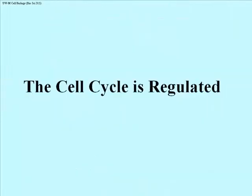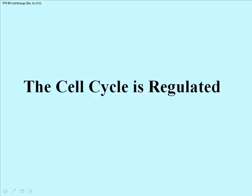The cell cycle is regulated. The ability of a cell to progress from one phase to the next is under control — it's not predestined. Entering a new phase requires that the previous phase be completed in good order. This is a first clue that there are molecular factors produced in the cytoplasm responsible for controlling whether or not a cell goes into the next phase.